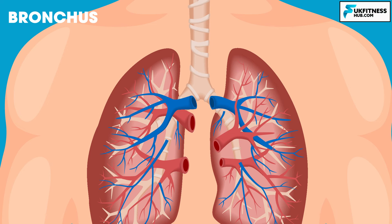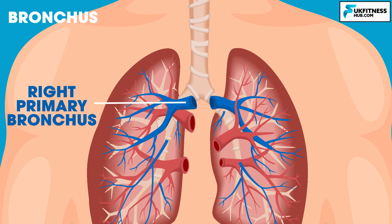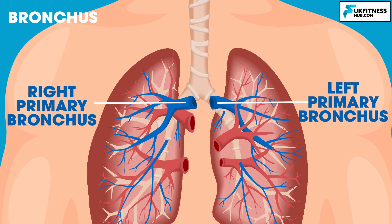This is where the trachea meets the lungs. It divides into the left primary bronchus and the right primary bronchus. These bronchi deliver air into the lungs and are made from firm C-shaped rings of cartilage. These primary bronchi quickly subdivide into secondary bronchi that lead to different lobes within each lung. The right lung, being slightly larger, has three lobes, whilst the left lung has two.